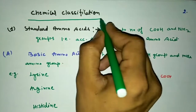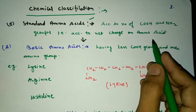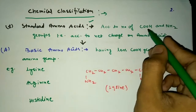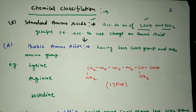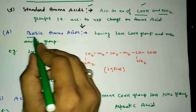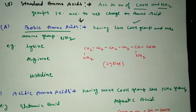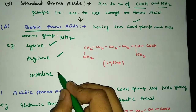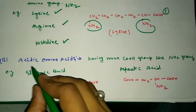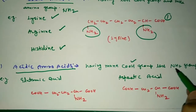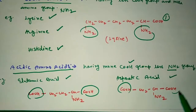First is the chemical classification. According to their chemical structure, they are firstly called standard amino acids. Based on their charge, they can be classified into basic amino acids, having fewer COOH groups and more NH2 groups. The NH2 group gives a basic nature, and the basic amino acids are lysine, arginine, and histidine. For example, lysine has two NH2 groups and only one COOH group. Second are the acidic amino acids having more COOH groups and fewer NH2 groups — glutamic acid and aspartic acid, with two COOH groups and one NH2 group.